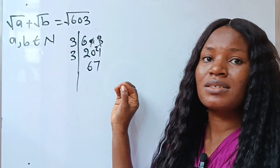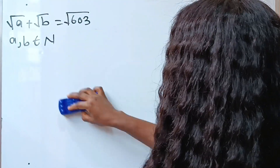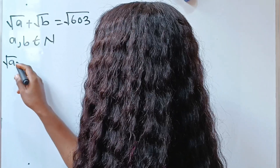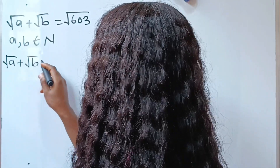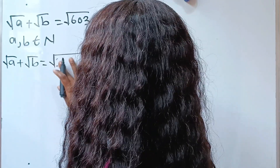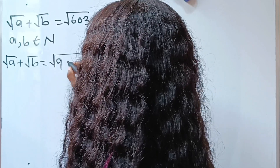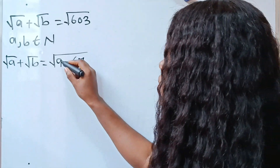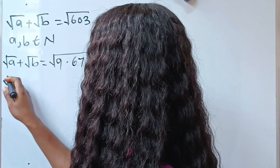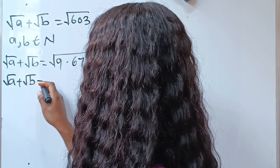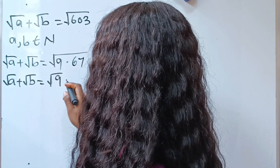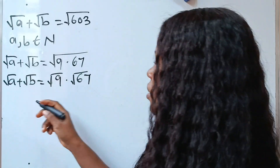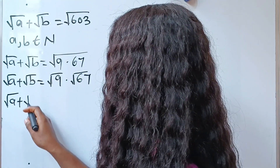We can rewrite our question as √a + √b = √9 × √67, because three times three is nine. So we have √a + √b = √9 × √67, which gives √a + √b = 3√67.